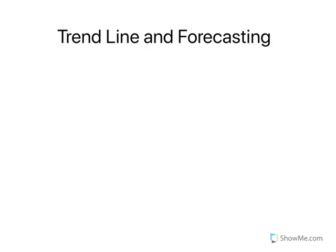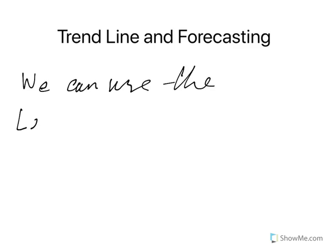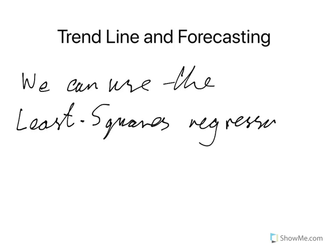Today we're up to the last part of the time series data, and we're looking at trend-highlighted forecasting. We've talked about trends, behaviors, patterns — seasonalizing, de-seasonalizing — and how we can use these to make predictions. The trend line we use is our least squares regression line, and once we've got that we can use it to do some forecasting.